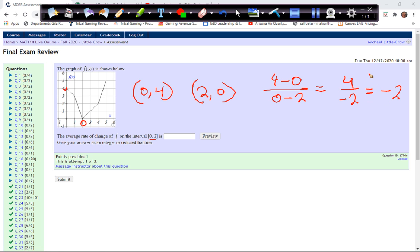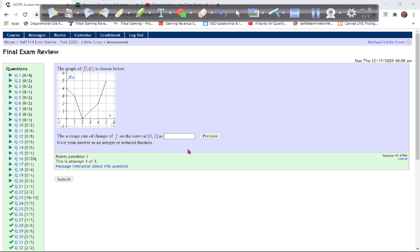So we get 4 over negative 2, which gives us a slope of negative 2. And as long as we, this is right. Your answer is integer or reduced fraction. So negative 2 is our answer.